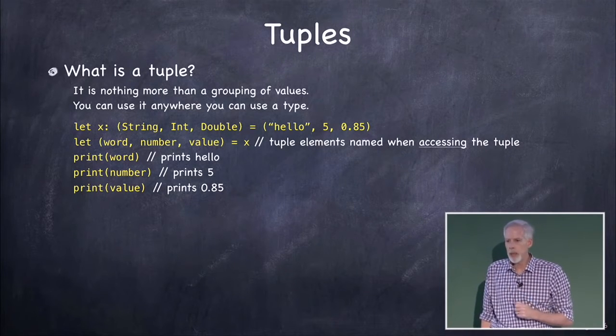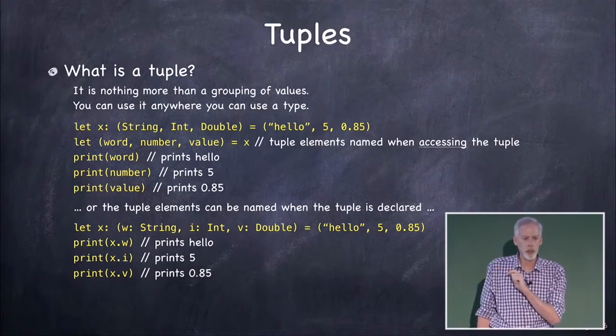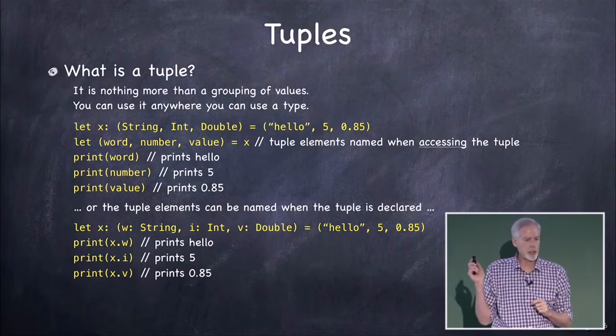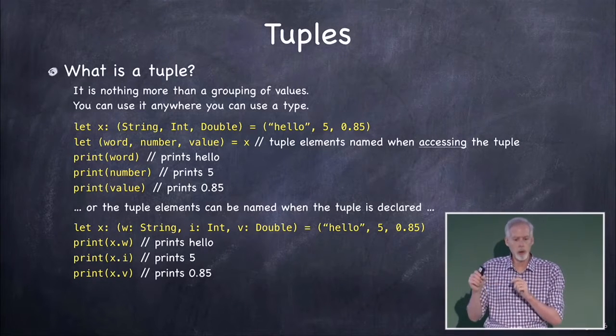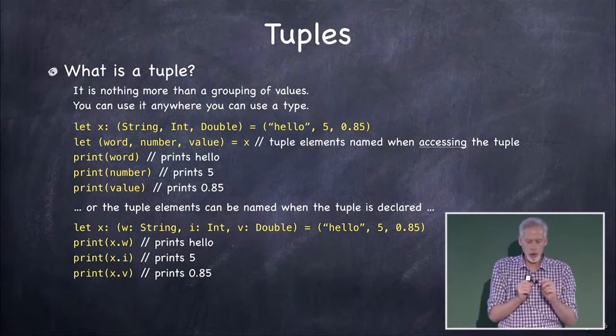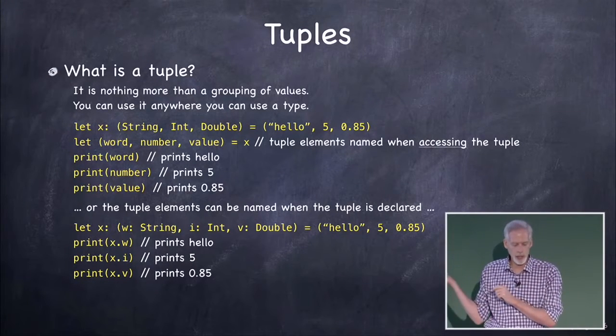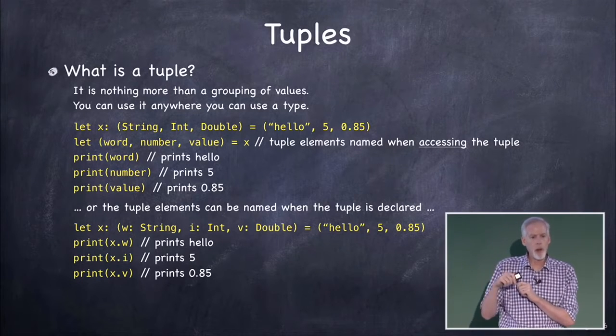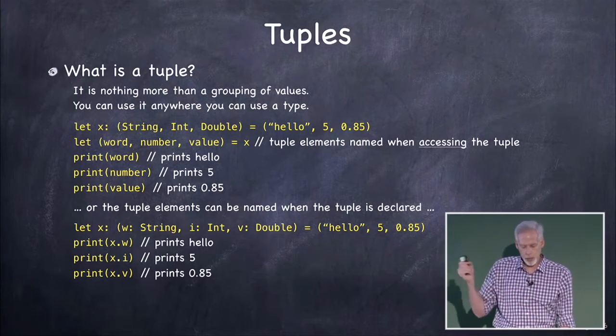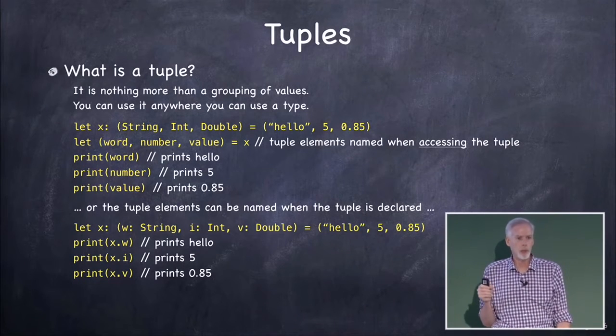Another way to do it is when you create the tuple, you can name each of the things in the tuple. So here, I'm letting x this time be w colon string, i colon int, v colon double. I'm giving the names w, i, and v to the things inside the tuple. And I'm still assigning it just like I did in the version above. But now, if I wanna get at the values, I can just say x dot w, x dot i, and x dot v to get at the tuple values.